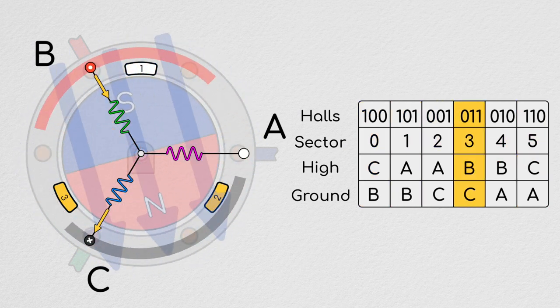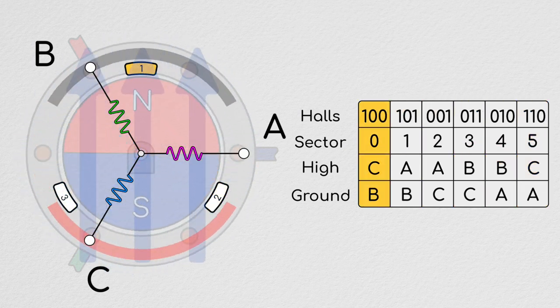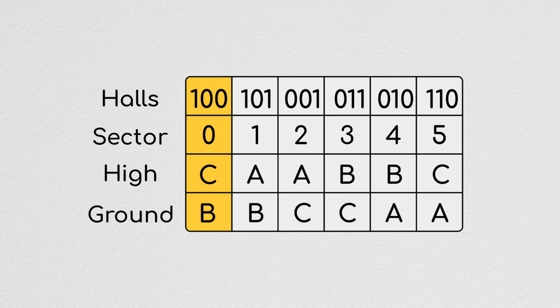On a side note, the table for rotating the motor clockwise instead of counterclockwise would be the same, except what we had previously connected to high for a given sector would now connect to ground, and what we had connected to ground would now connect to high.